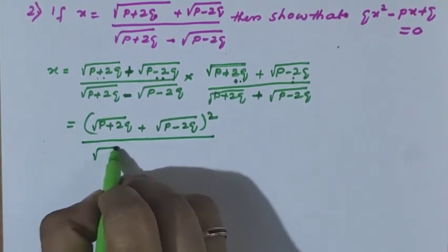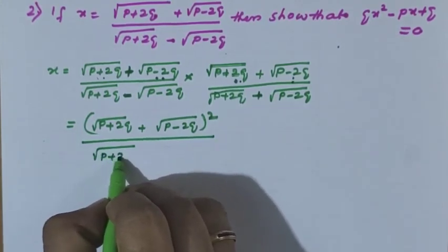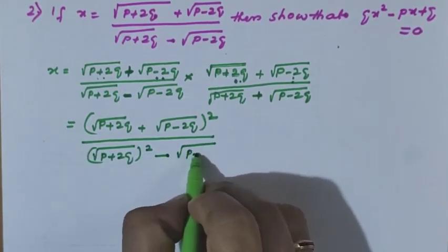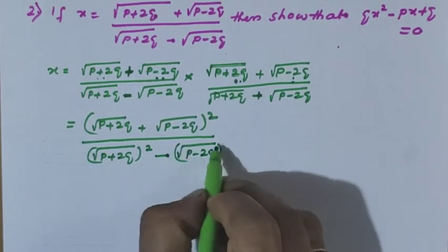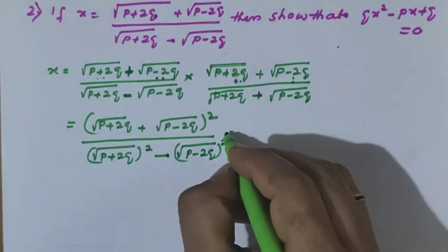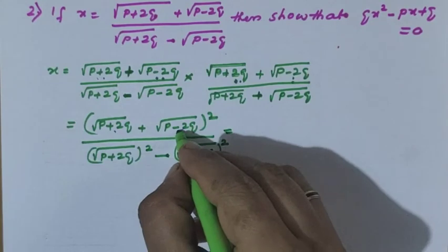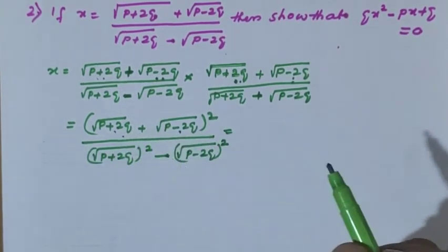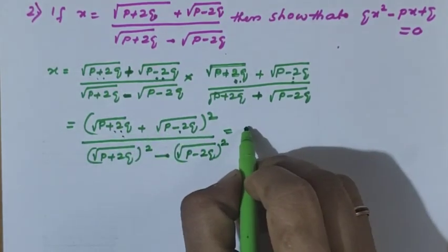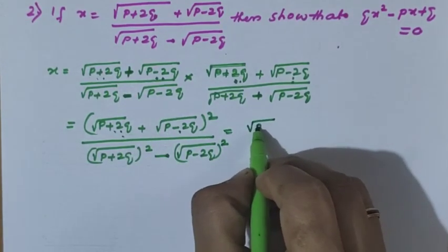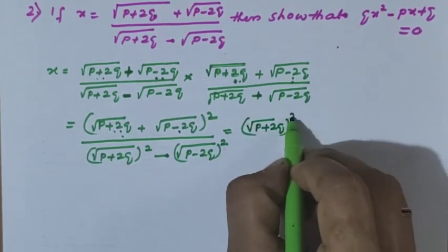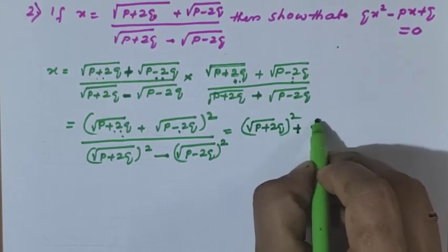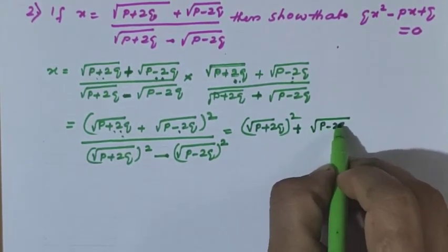Denominator follows the same rule: root of p plus 2q whole squared minus root of p minus 2q whole squared, which is a squared minus b squared. Now for a plus b whole square, the three terms are a squared plus b squared plus 2ab. So a squared is root of p plus 2q whole squared, b squared is root of p minus 2q whole squared.